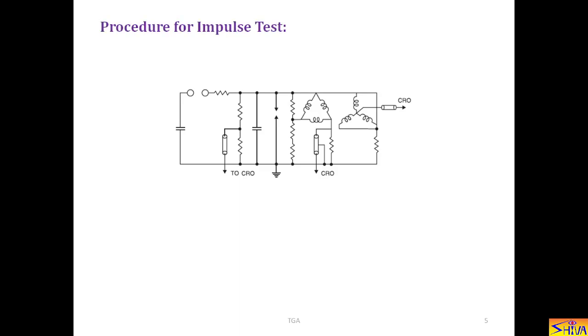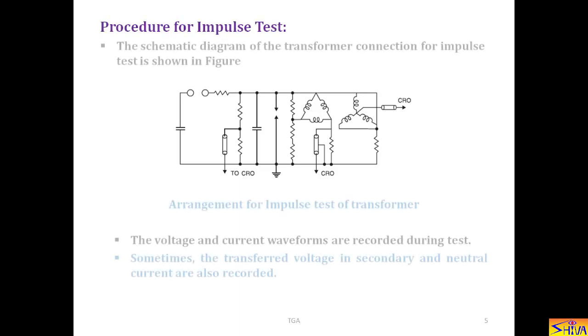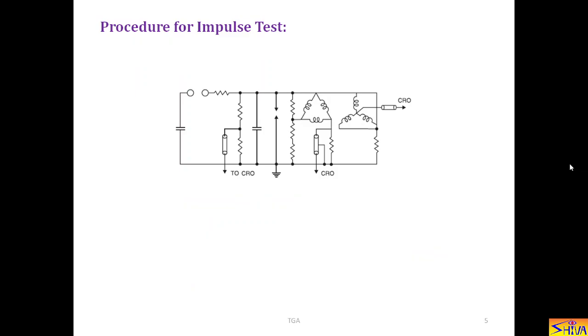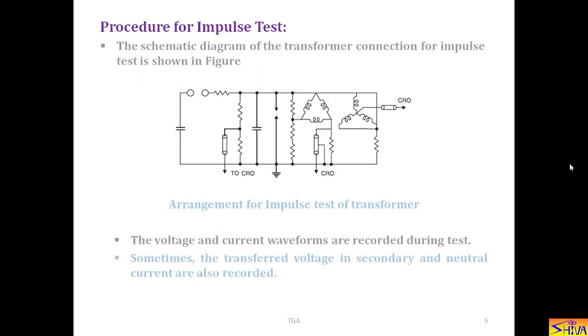Now, let us see what is the procedure for impulse test. The schematic diagram of the transformer connection for impulse test is shown in this figure. This is the transformer. Here it is the impulse generator output voltage shown in the form of capacitor. This is rod gap. It is triggered to apply the impulse voltage. This is potential divider. And this point is going to CRO. Low voltage arm of the potential divider is going to the CRO for recording of the impulse.